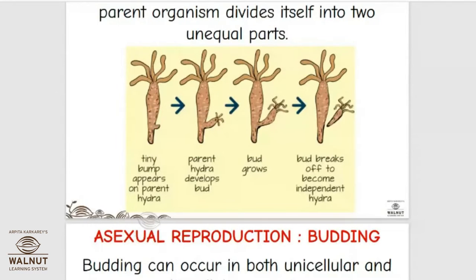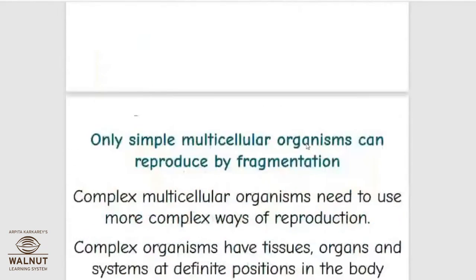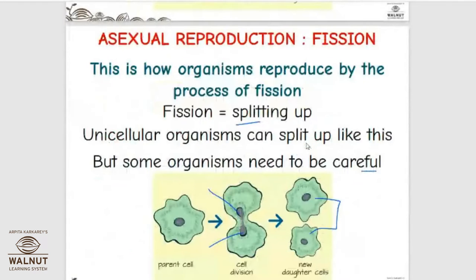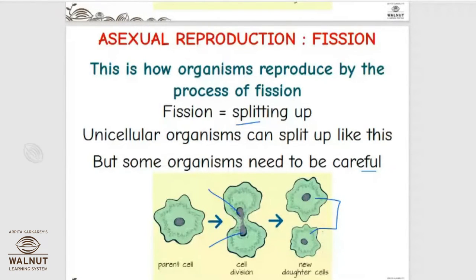Good morning students. Today we will be continuing with the same topic: how do organisms reproduce. We have started with asexual reproduction. In asexual reproduction, no sex chromosomes or sex cells are involved — only one parent is involved. Reproduction means to produce an organism of our own kind.